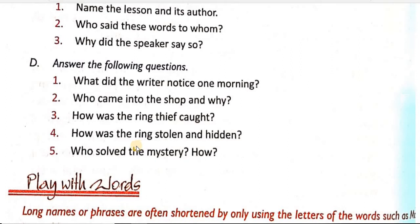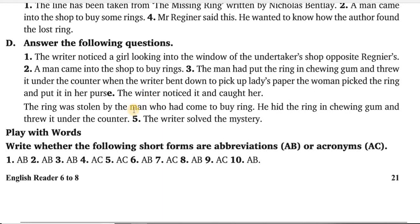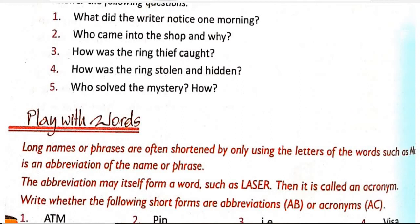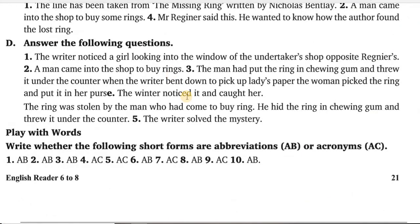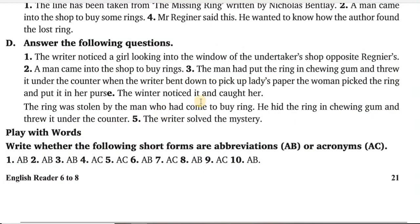And the last is: how was the ring stolen and hidden? Woh ring kaise stolen hui thi. The ring was stolen by the man who had come to buy a ring. He hid the ring in chewing gum and threw it under the counter. Counter ke andar us cheez ko chupa ke woh chala gaya tha. The next question is: who solved the mystery? The writer solved the mystery. Yeh mystery writer ne solve ki thi. How? Yeh hum question number 3 mein parh chuke hain, to yeh yahan nahi likhenge.